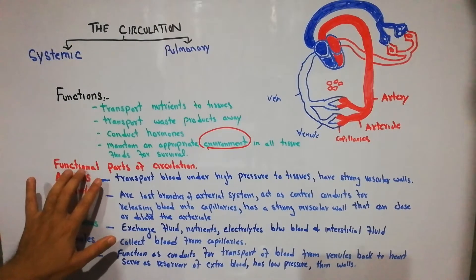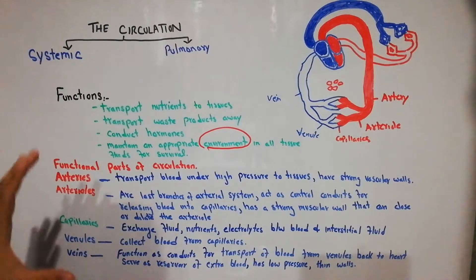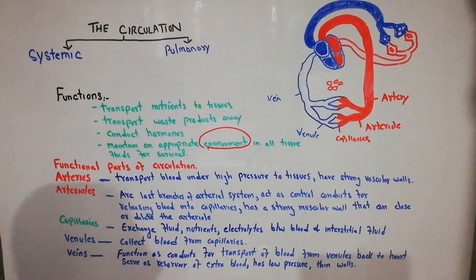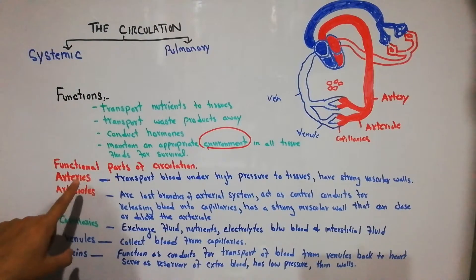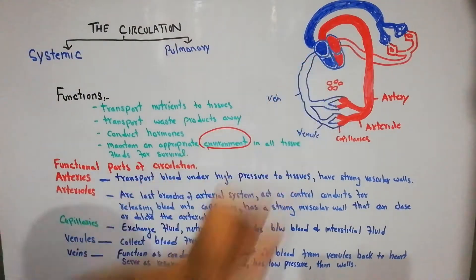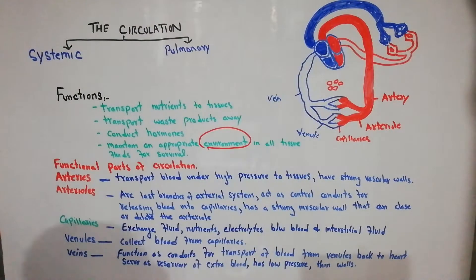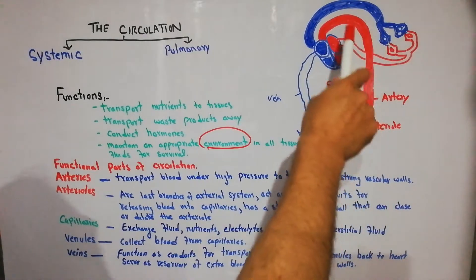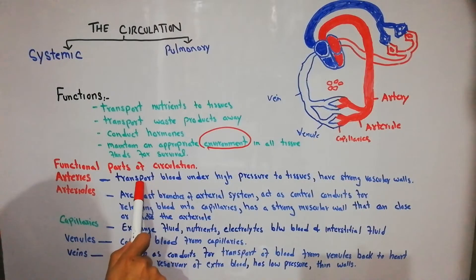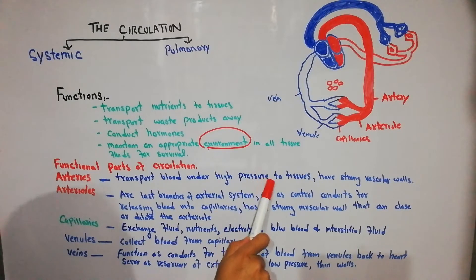Now, what are the functional parts of the circulation? The heart pumps the blood into the blood vessels, which are of different types and all take part in the circulatory system. The first part are the arteries. When the heart pumps the blood it comes initially into the aorta, which is a big artery. The aorta takes the blood towards the arteries, and these arteries transport the blood under high pressure to the tissues — they have strong vascular walls.